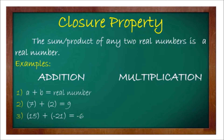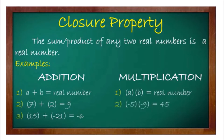For examples under multiplication: a times b equals a real number, where a and b are real numbers. Negative 5 times negative 9 equals positive 45, because the two numbers have like signs. Negative 4 times positive 4 equals negative 16.